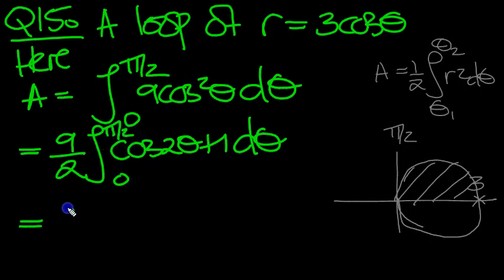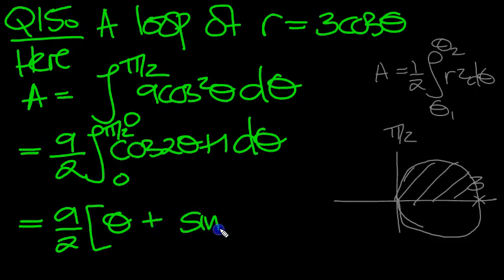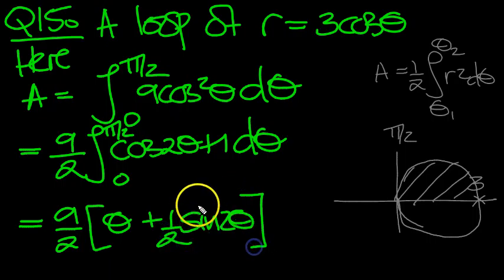Which equals 9 over 2. Now integrate. We get theta for that term there, put that first, plus sine 2 theta times 1 half. And that will differentiate to the cos 2 theta on top, between 0 and pi over 2.